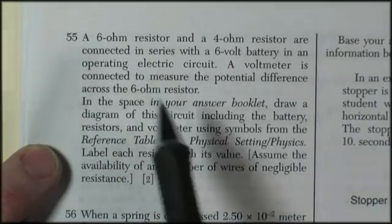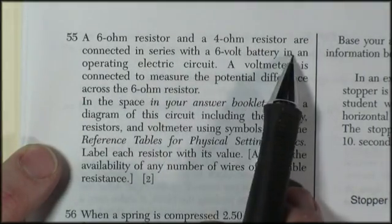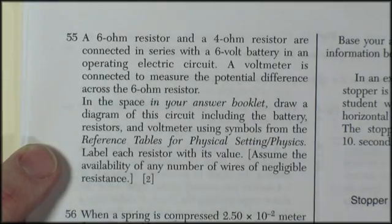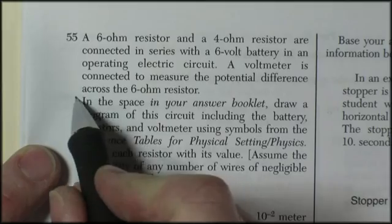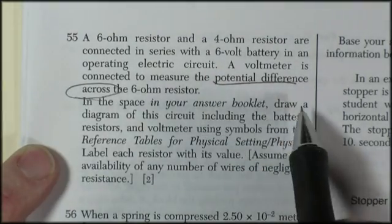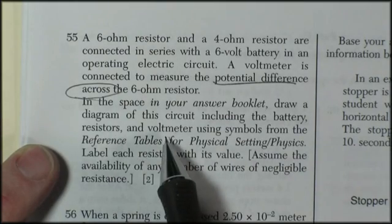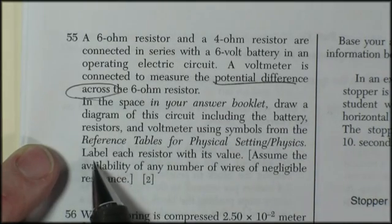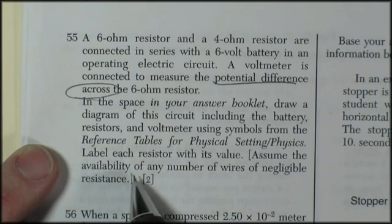Question 55. A 6-ohm resistor and a 4-ohm resistor are connected in series with a 6-volt battery in an operating electric circuit. A voltmeter is connected to measure the potential difference across the 6-ohm resistor. In the space, draw a diagram of this circuit, including the battery, resistors, and voltmeter using symbols. Label each resistor with its value. Assume the variable on any number of wires of negligible resistance.